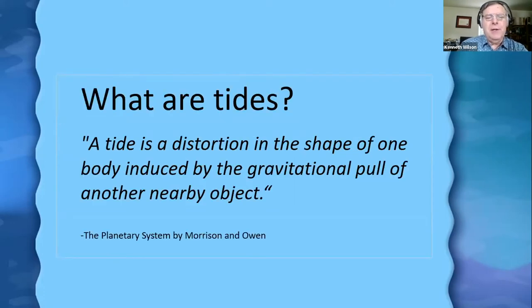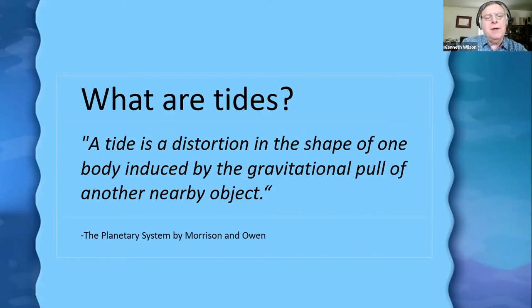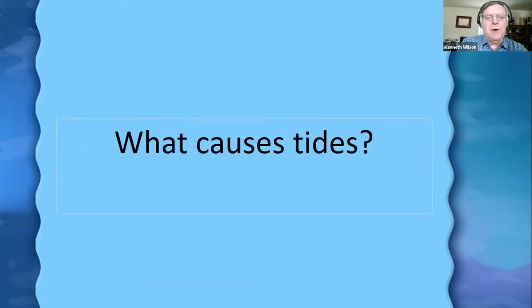To give you a clinical definition, a tide is a distortion in the shape of one body induced by the gravitational pull of another nearby object. That's the basic clinical scientific definition of what tides are.